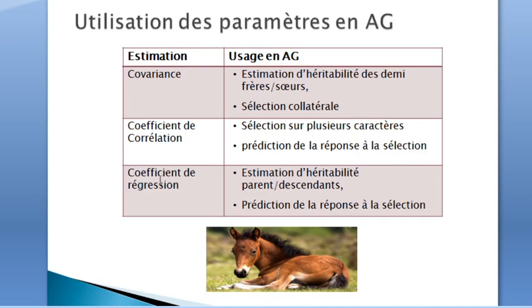The regression coefficient is used for the estimation of parent-offspring heritability, as well as the prediction of correlated responses to selection.